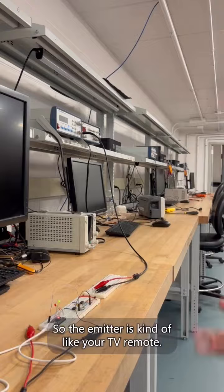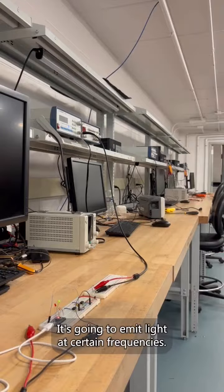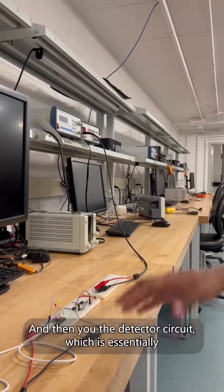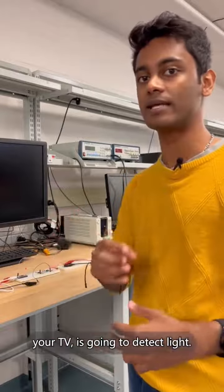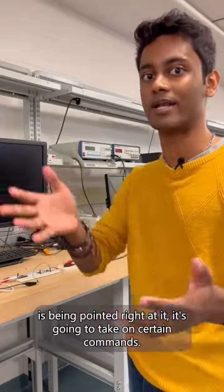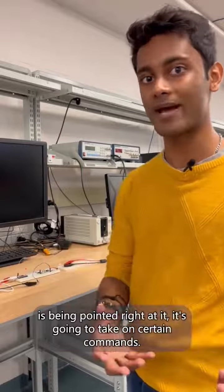The emitter is kind of like your TV remote—it's going to emit light at certain frequencies. And then you have the detector circuit, which is essentially your TV. It's going to detect light and depending on what frequency of light is being pointed right at it, it's going to take on certain commands.